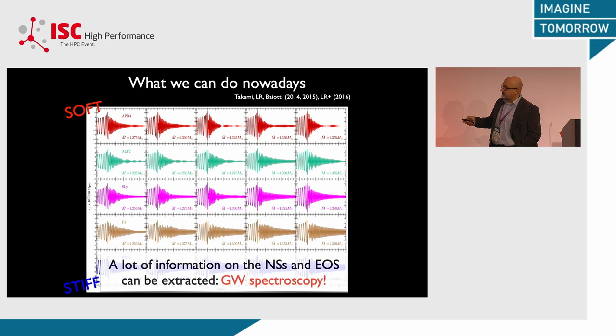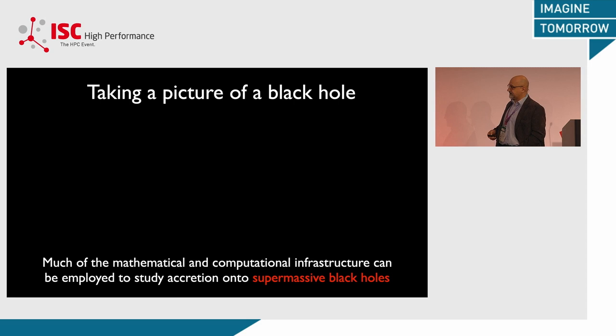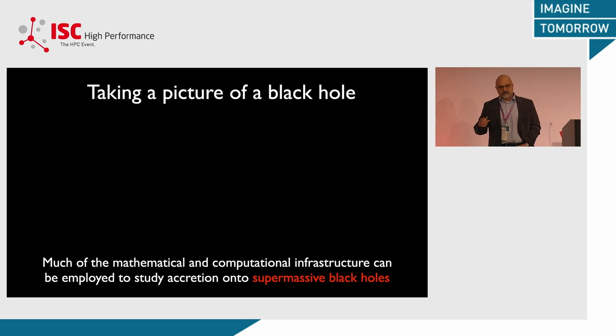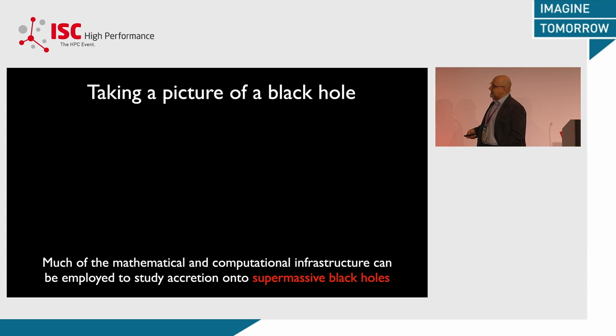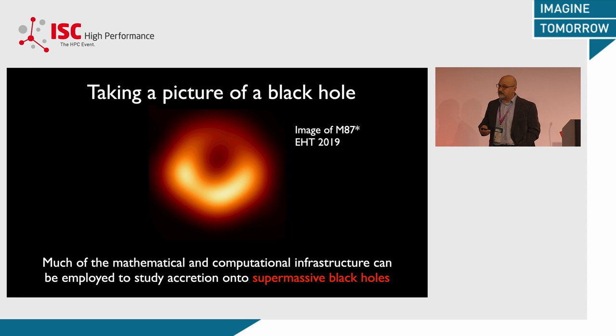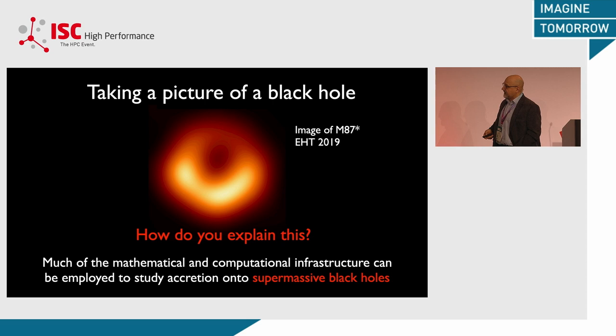We haven't seen any of this yet — all of what we've seen observationally is before the two stars merge, but we haven't seen the post-merger signal yet. I was also asked to say something about black holes and images. Most of the equations I've shown can be used in a completely different context: accretion onto supermassive black holes at the center of galaxies, like at the center of our galaxy. I've been involved as part of the Event Horizon Telescope collaboration, which in 2019 published this image. My task was to explain why it looks the way it does.